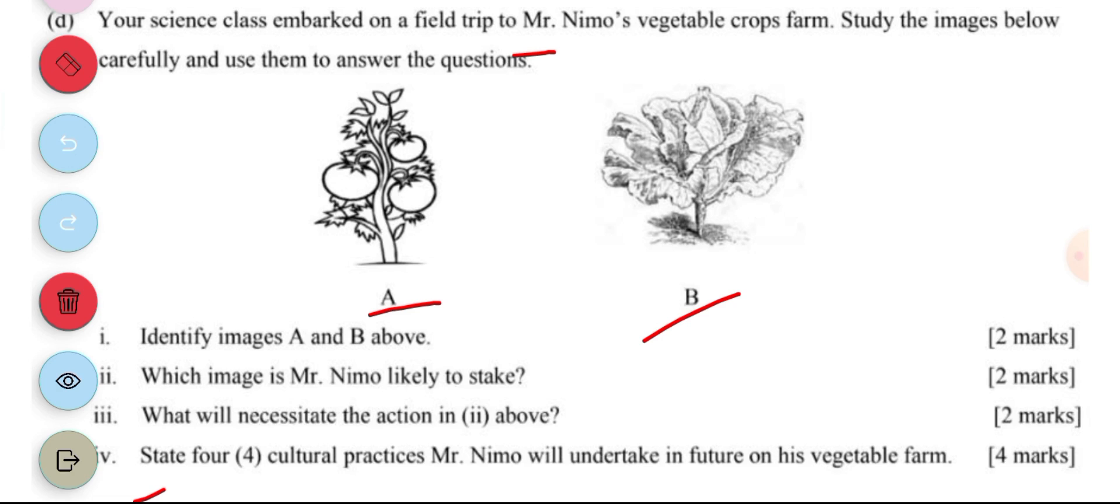Now the second part says: which image is Mr. Nemo likely to stake? Now this word stake - to stake means to support the weak plant. Now if you've ever seen tomato plant before, you know that there's a need to stake it. So the answer to this is A, capital A.